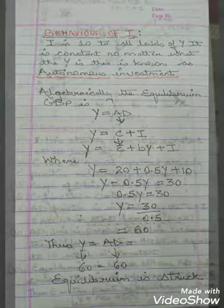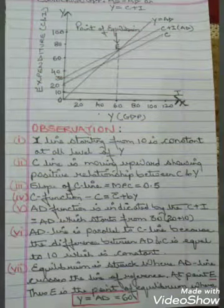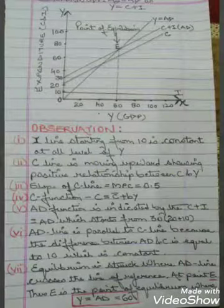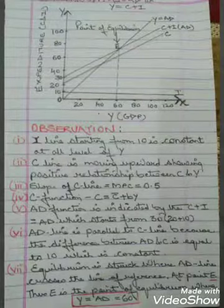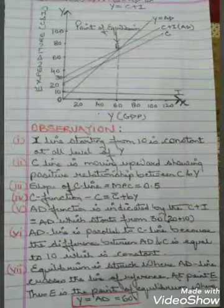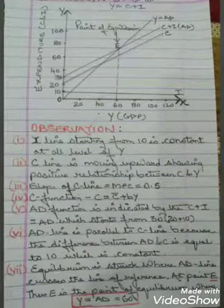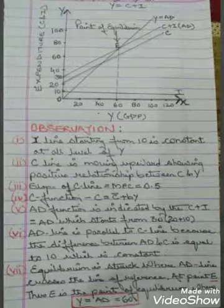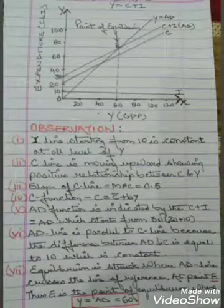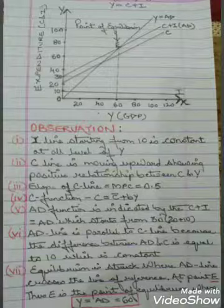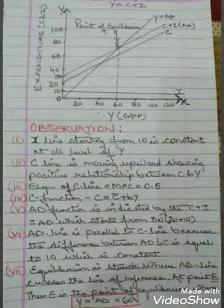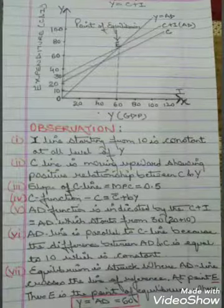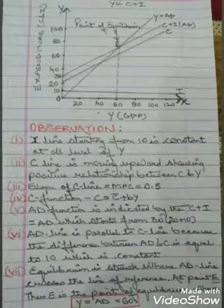In the diagram, the X-axis shows income and the Y-axis shows expenditure, that is C plus I or AD. There is a line forming a 45-degree angle — this is the line of reference, and every point on it shows Y equals AD. The I line starts from 10 and is constant at all levels of Y. The C line moves upward, showing a positive relationship between consumption and income, with slope equal to MPC of 0.5, following the function C-bar plus bY.